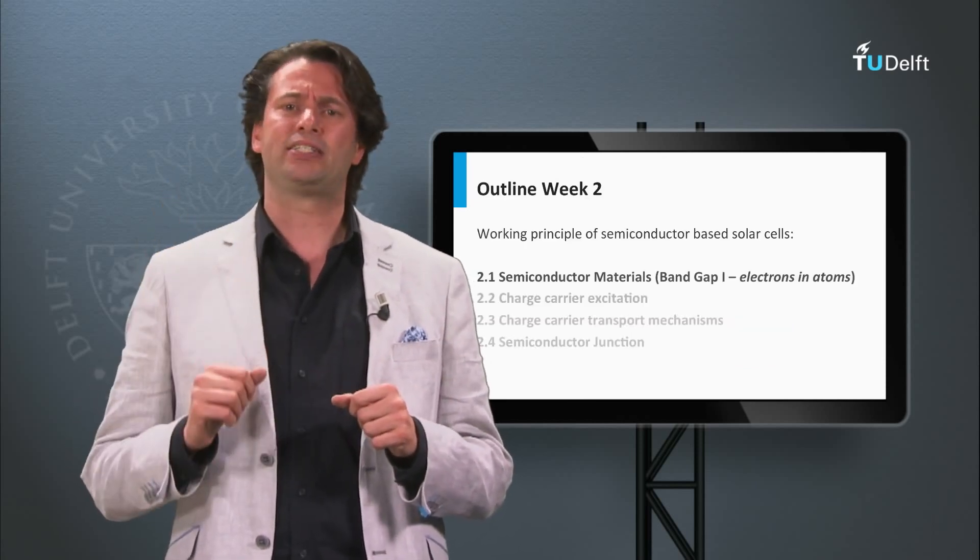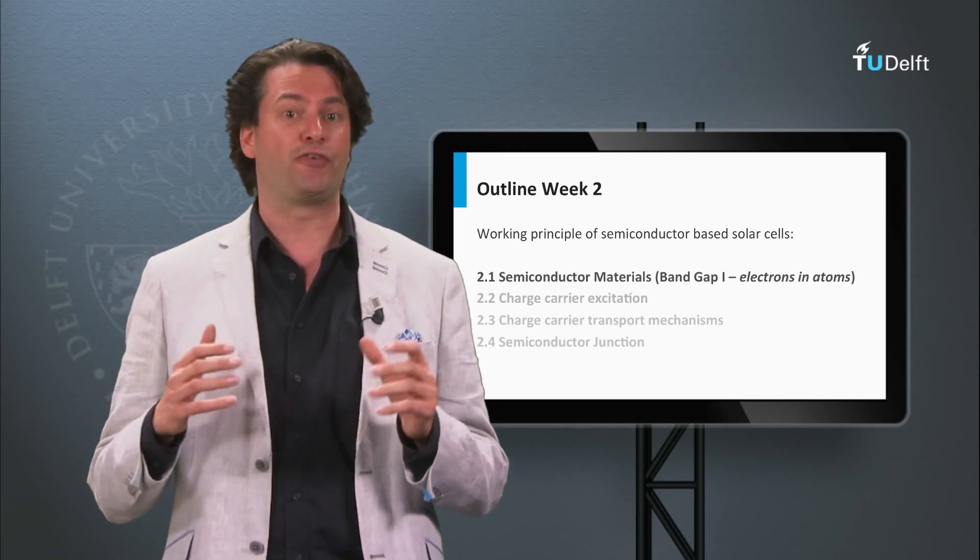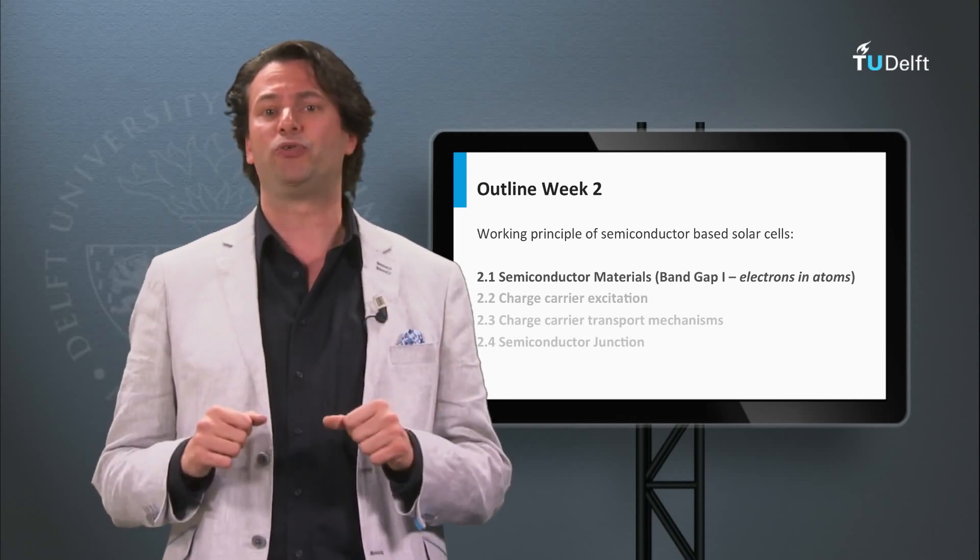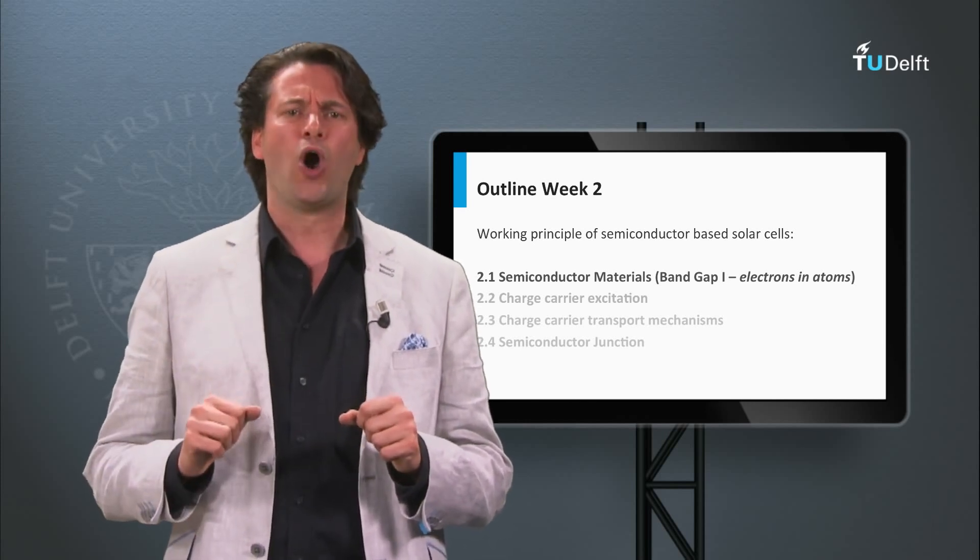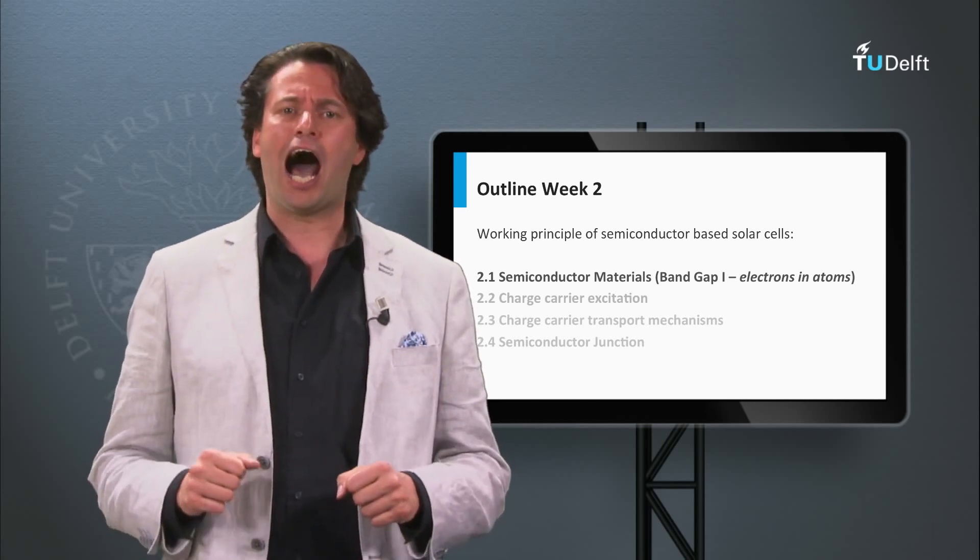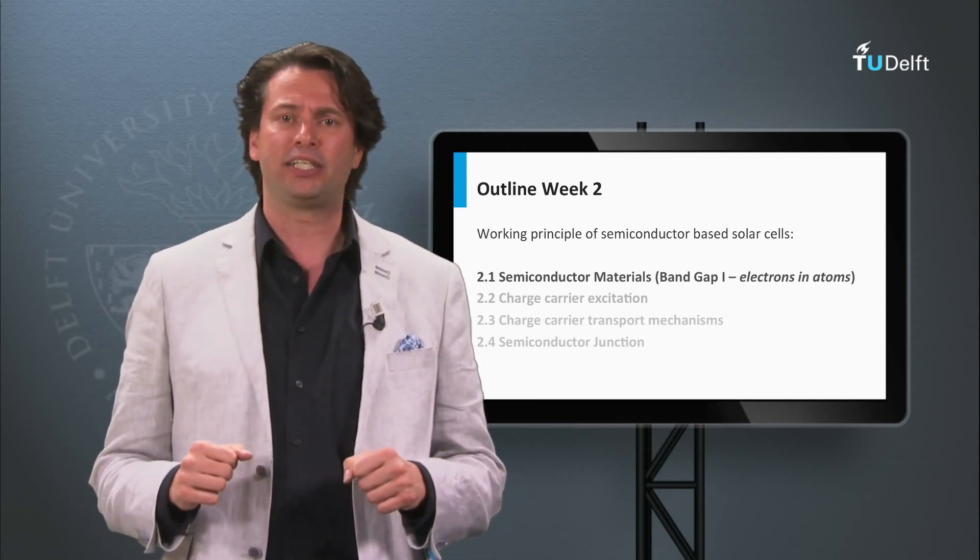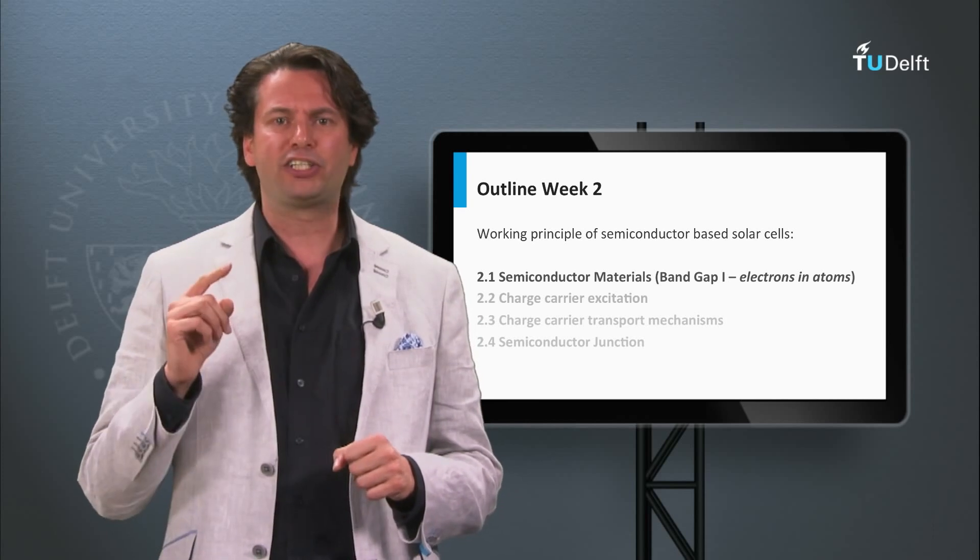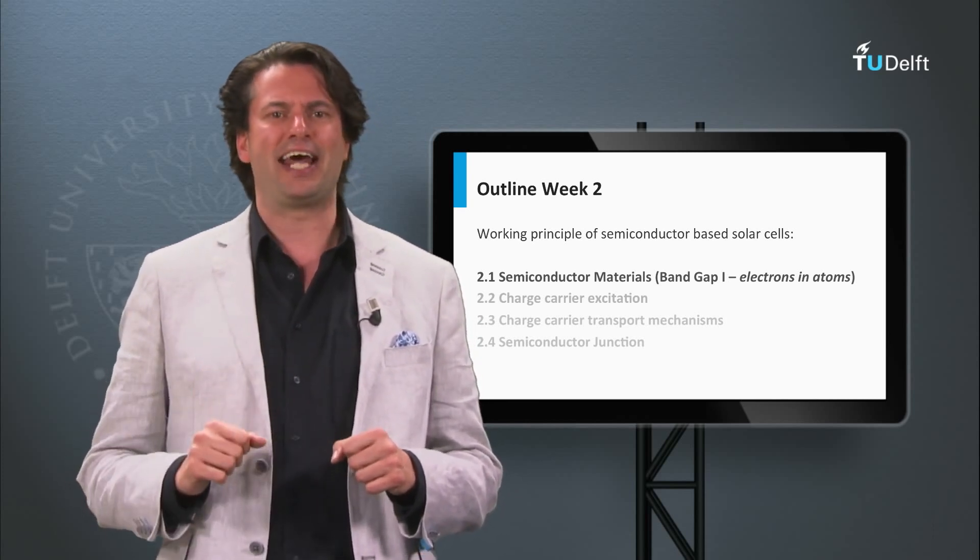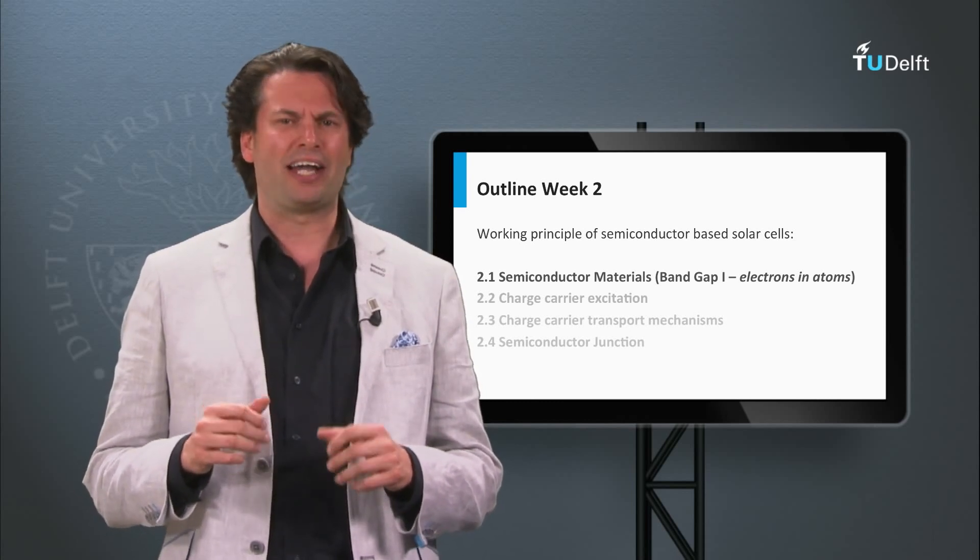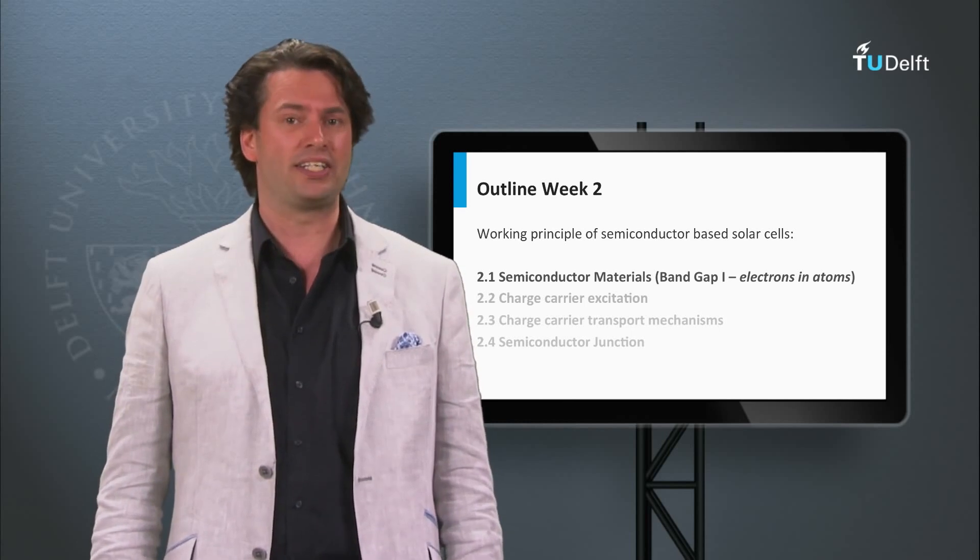The question now is: what is the principle behind the existence of the forbidden band gap between the valence and conduction band, or in other words, what determines how strongly the electrons are bound to the atoms in the lattice? I will discuss that in the next two blocks. First, in the next block we will look at how electrons are bound to the nucleus within an atom.